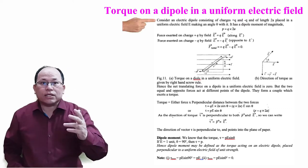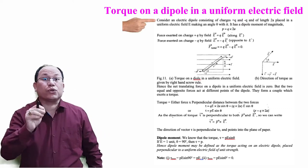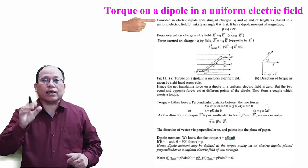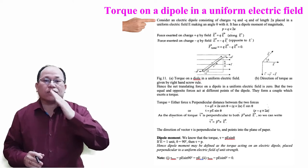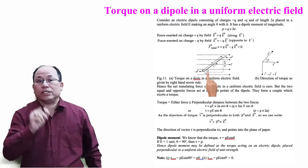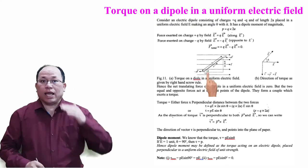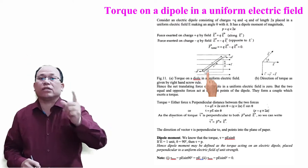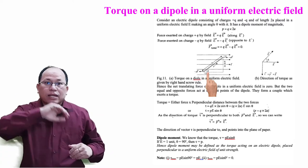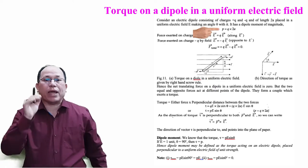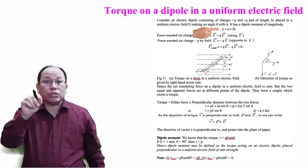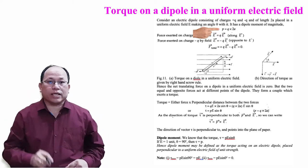Consider an electric dipole consisting of charges plus q and minus q, placed in a uniform electric field E, making an angle theta with it. The dipole moment p is equal to q into 2a.